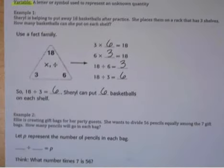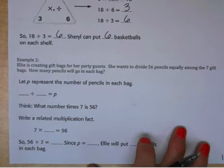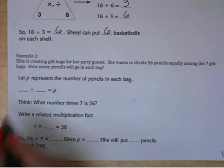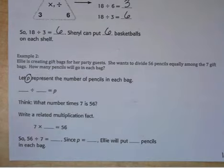Moving on to example 2 for this lesson. Example 2 says that Ellie is creating gift bags for her party guests. She wants to divide 56 pencils equally among the 7 bags. How many pencils will go in each bag? We are going to let P represent the number of pencils in each bag. That is our unknown, and P would be our variable.